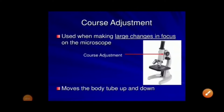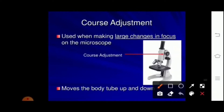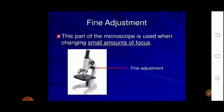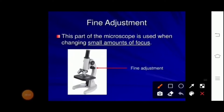The next part is the adjustment of the microscope. It consists of two adjustments that help in focusing the object. The bigger one is the coarse adjustment, through which the body can move up or down. It is used when making large changes in focus. The smaller one is the fine adjustment knob, which helps to focus or sharpen the magnification of the object and is used when making small changes in focus.